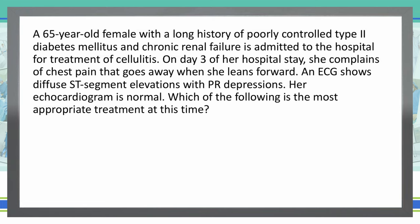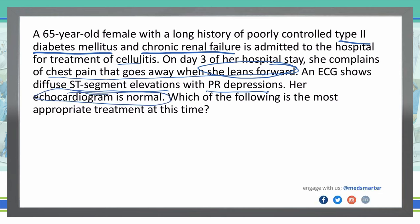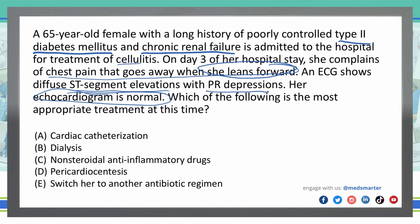Before we look at the answer choices, let's narrow things down. We've got a patient with poorly controlled type 2 diabetes and chronic renal failure, admitted for cellulitis, having chest pain that goes away when she leans forward — that's important. ECG shows ST segment elevations and PR depressions, and the echo is normal. That'll help us rule some things out. Take a minute, look at the answer choices, come up with your answer, and put it in the comment box below.